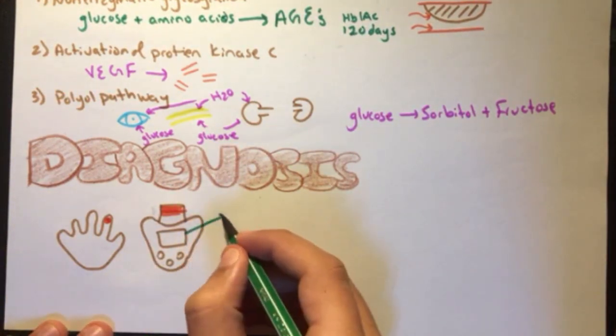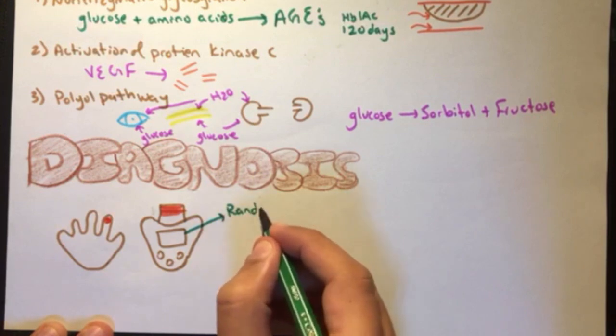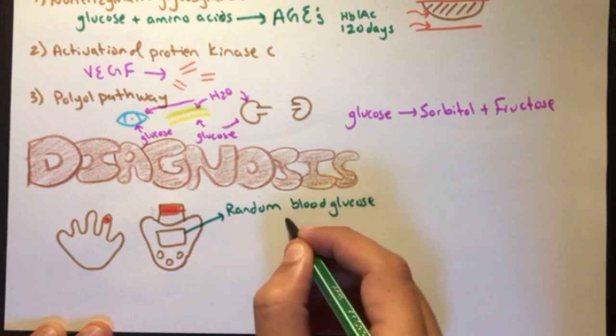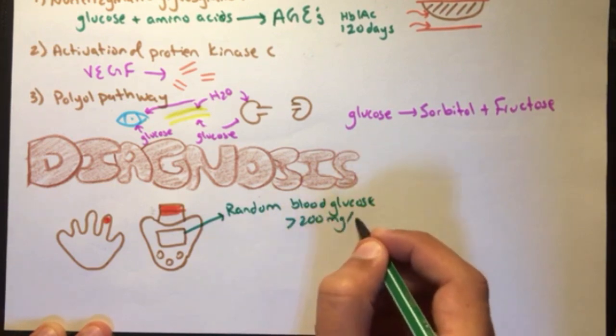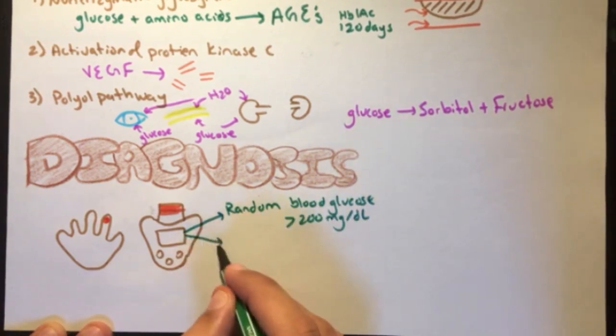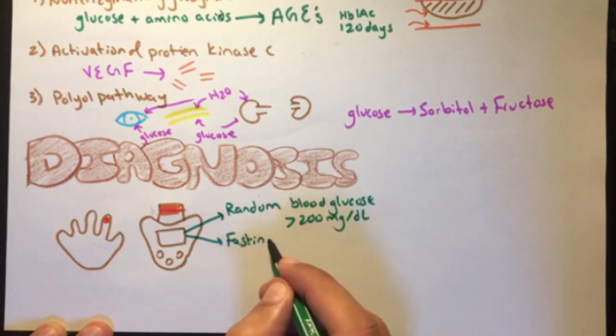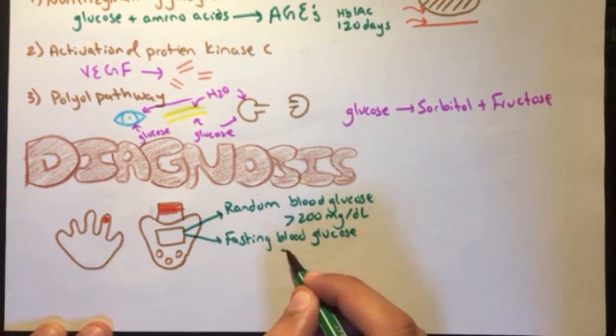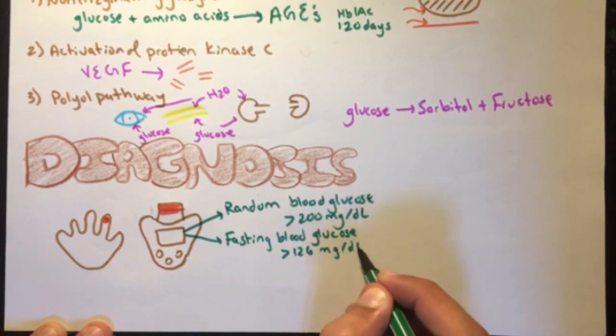Now, if random blood glucose level, which is measured at any time of the day, if the reading is more than 200 mg per deciliter, then the patient is diabetic. Fasting blood glucose level, which is measured after 8 hours of fasting with a reading of 126 mg per deciliter or higher, means that the patient is diabetic.